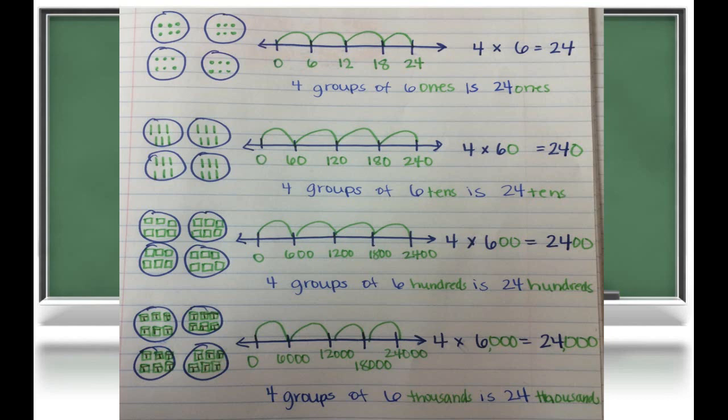Moving on, we have 4 groups of 600, so 4 groups of 6 hundreds is 24 hundreds, or 2,400. Furthermore, we have 4 groups of 6 thousands, which is 24 thousands. We want students to see this pattern instead of just learning the trick to move the zeros.